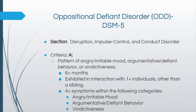Before we dive into parent management training, we want to give you a background on oppositional defiant disorder, particularly how it is diagnosed within the DSM-5. ODD is within the section of the DSM as disruptive, impulse control, and conduct disorder. There are multiple criteria points that a child or teenager needs to meet in order to receive this diagnosis. One would be patterns of angry or irritable mood, argumentative or defiant behavior, or vindictiveness that lasts within six months or more and is exhibited in interaction with one or more individuals other than a sibling.